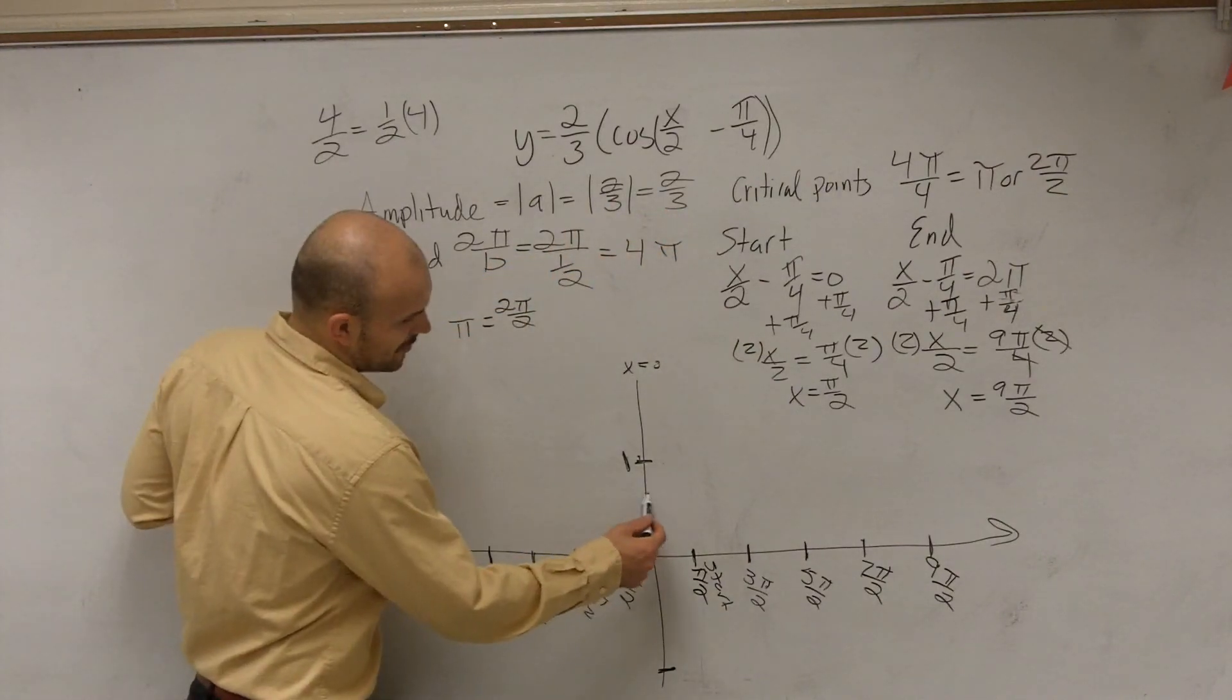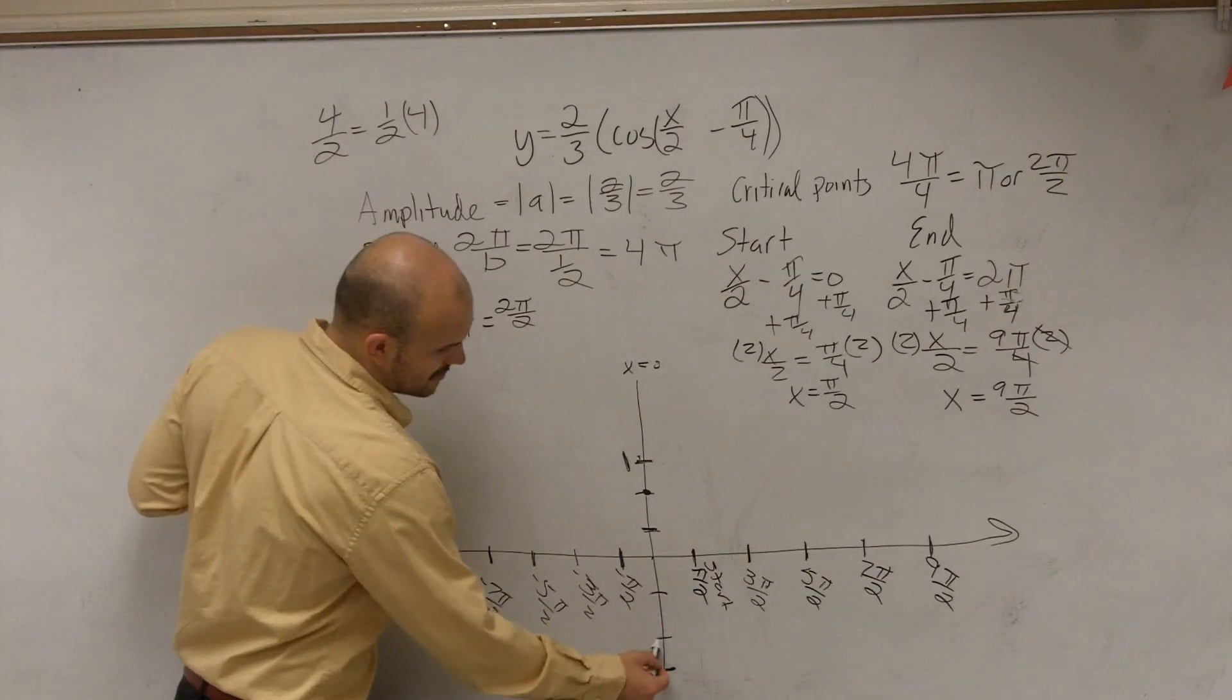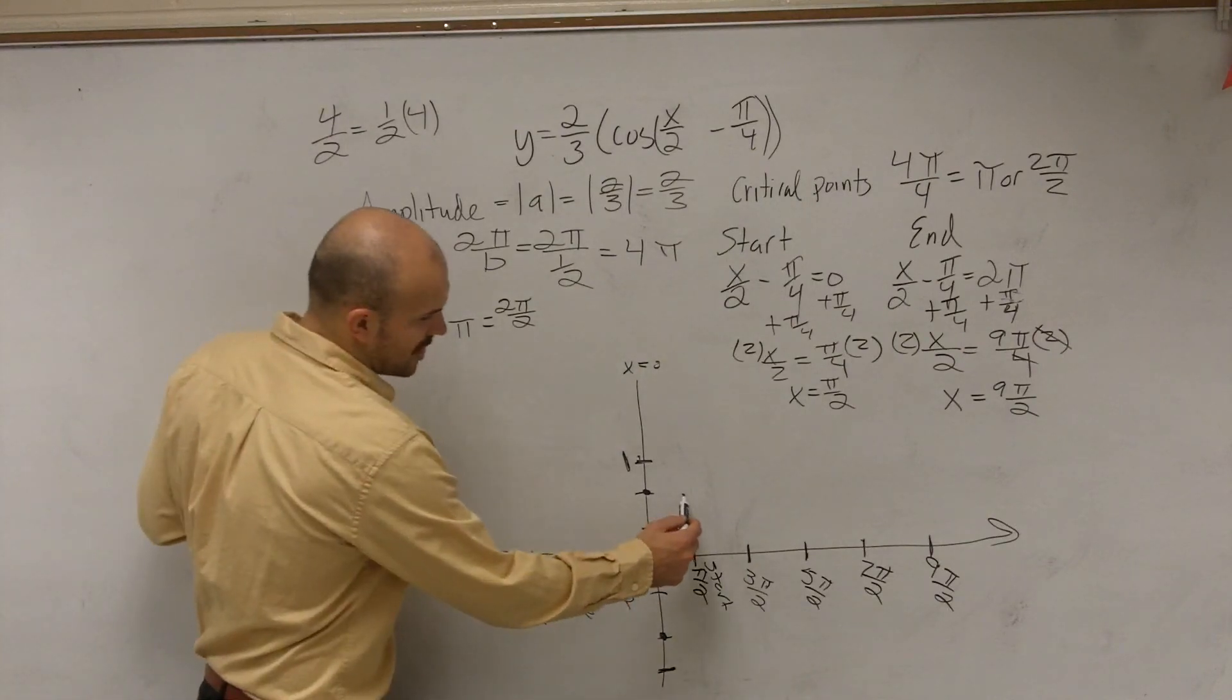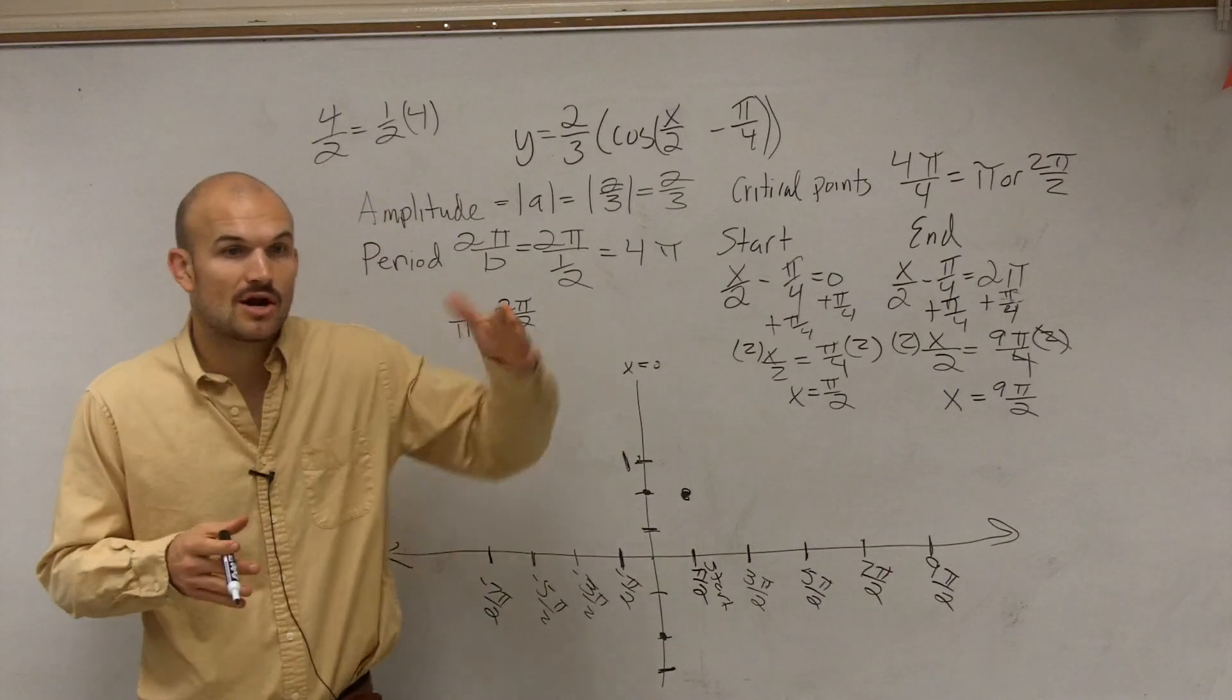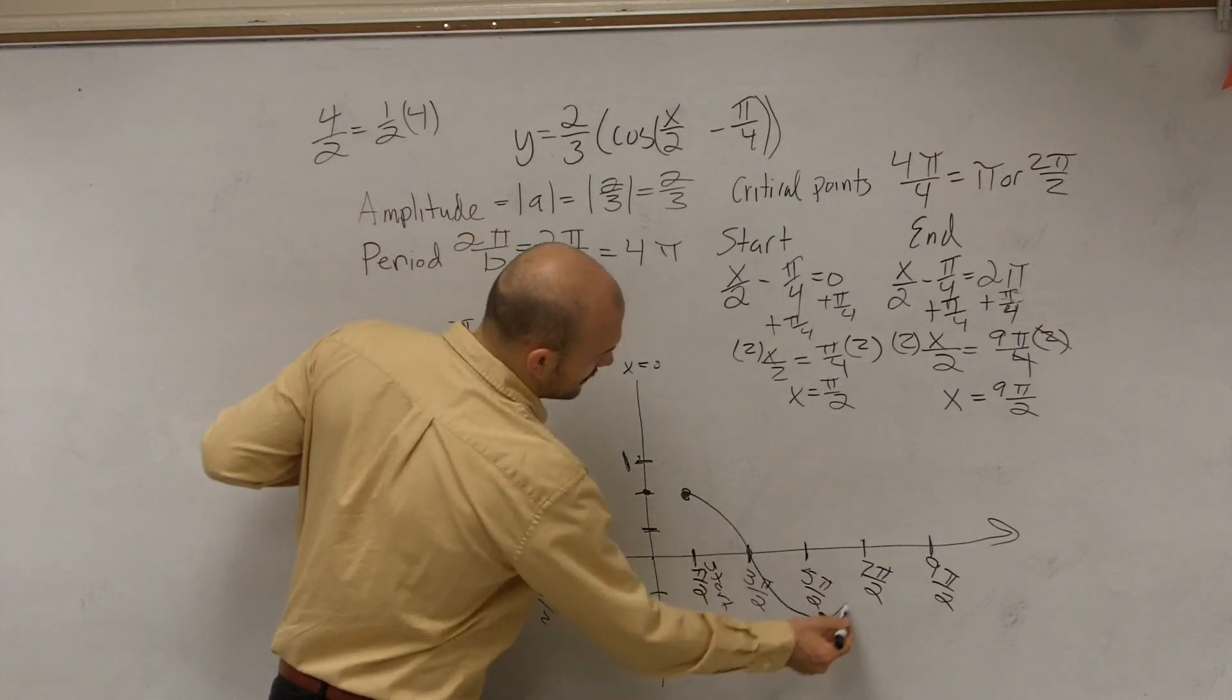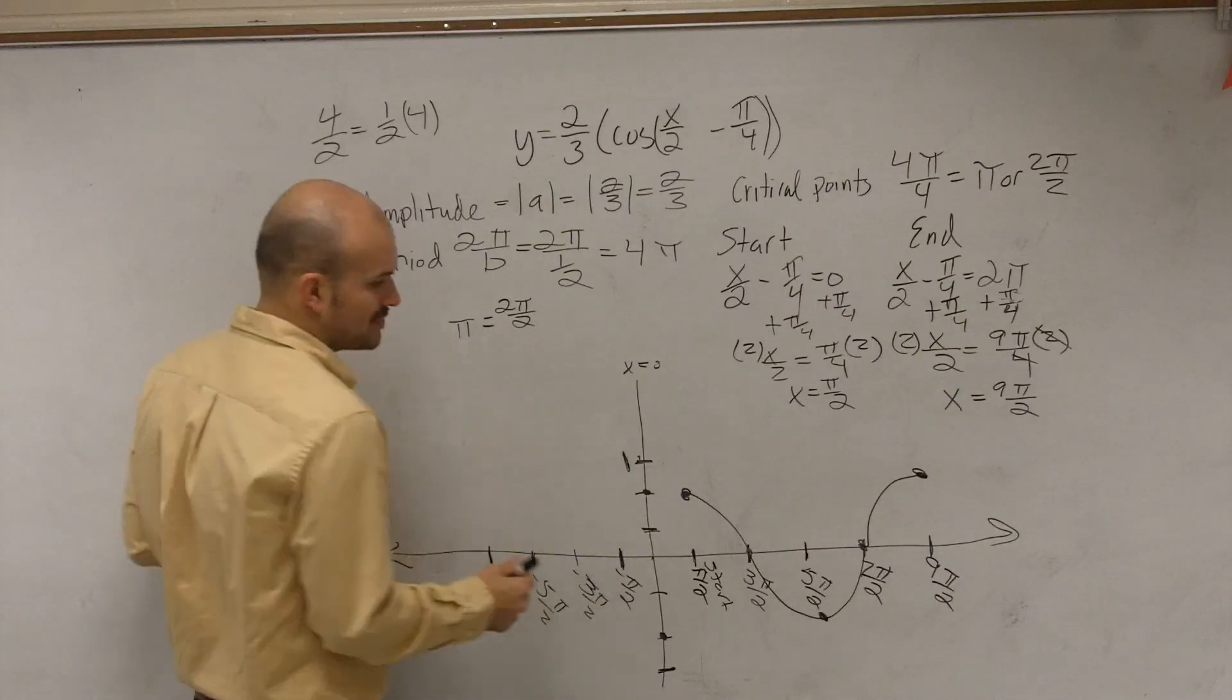Now, if I broke this up into thirds, roughly, you could say 2 thirds is going to be right here. So that means that's going to be my max height and my minimum height on my graph. So my starting point is going to start at 2 thirds as a max, because remember, cosine at its starting point started at its maximum. Then the next critical point is the x-intercept. Then it goes down to the minimum, back to the x-intercept, back up to the maximum.